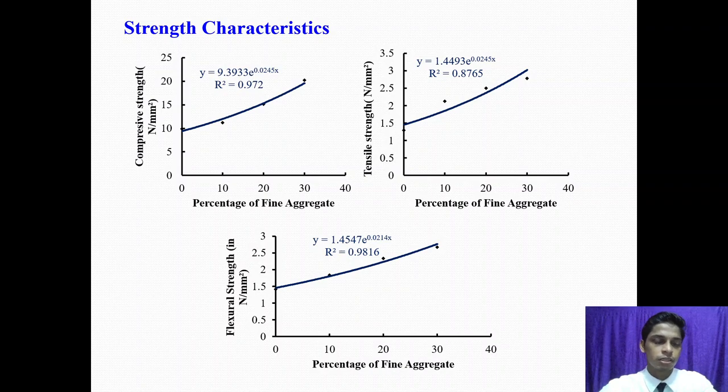Strength characteristics. First graph is for compressive strength, next one is for tensile strength, and last one is for flexural strength. From this graph, we observed that with the increase in percentage of fine aggregate, the characteristic strength of concrete increases.